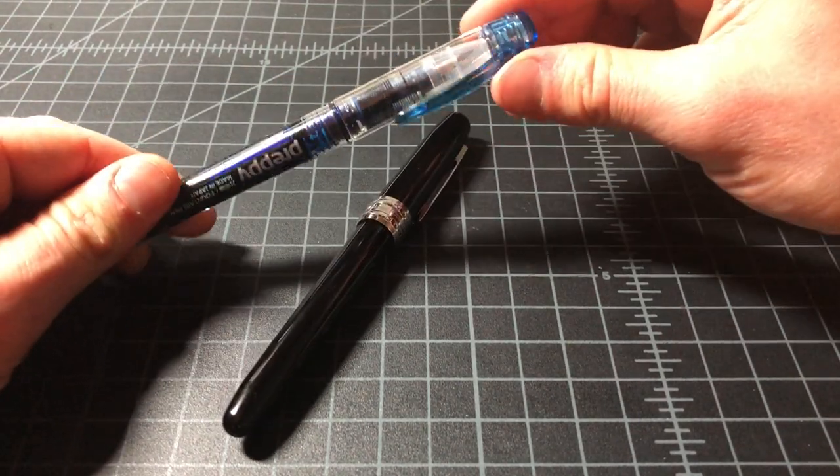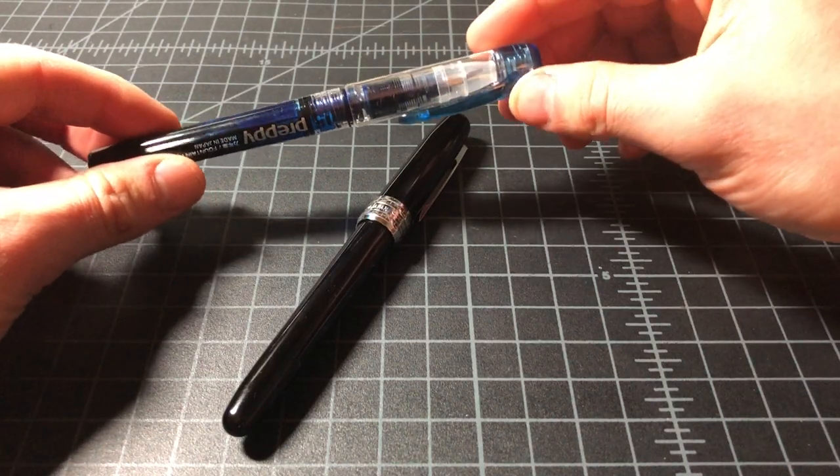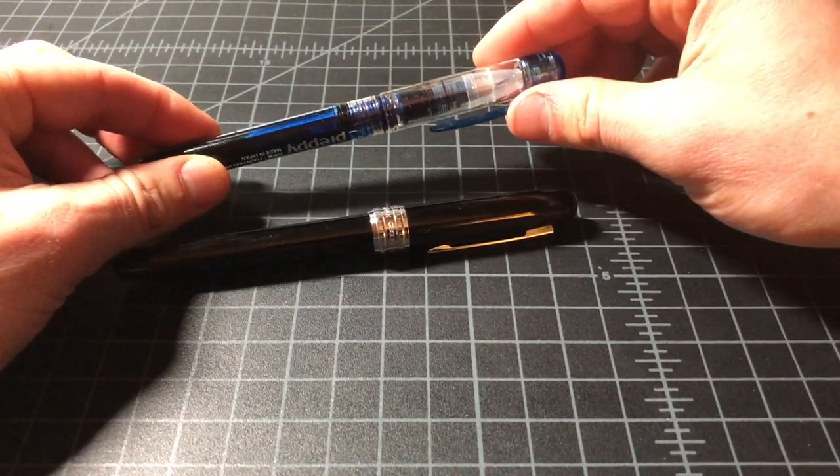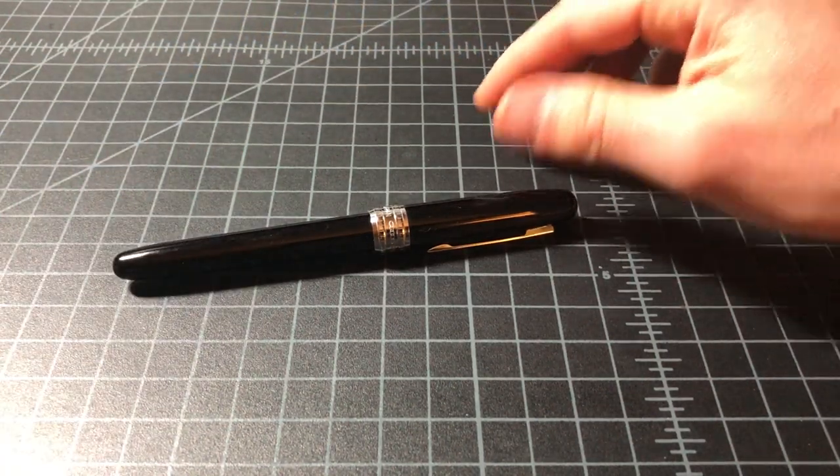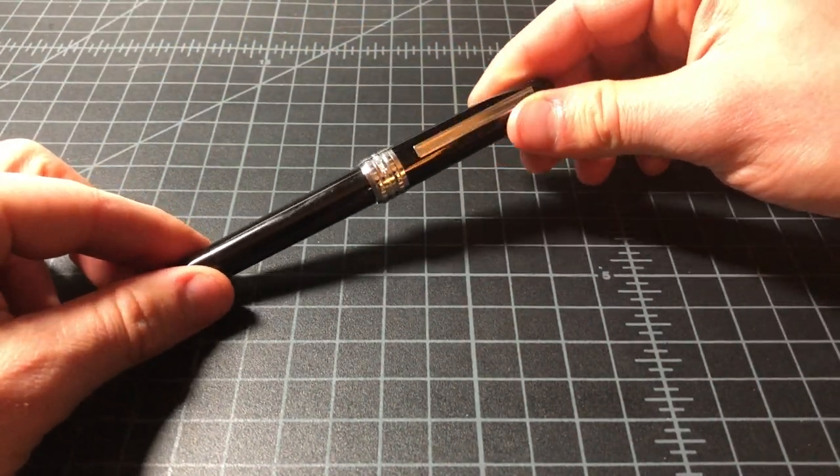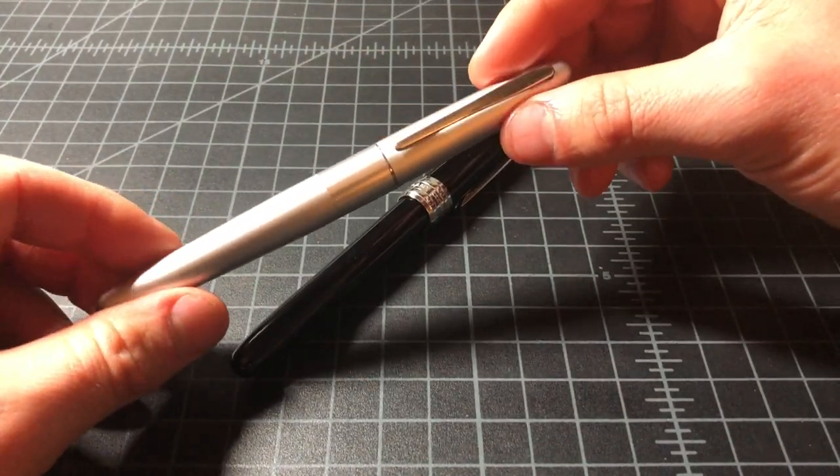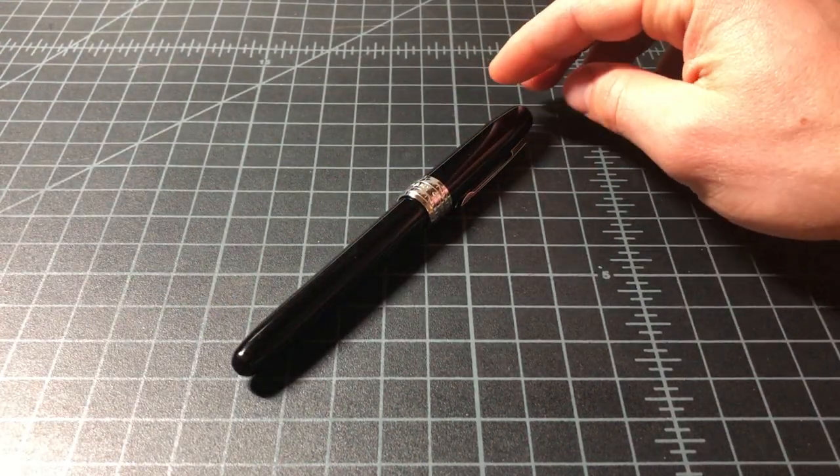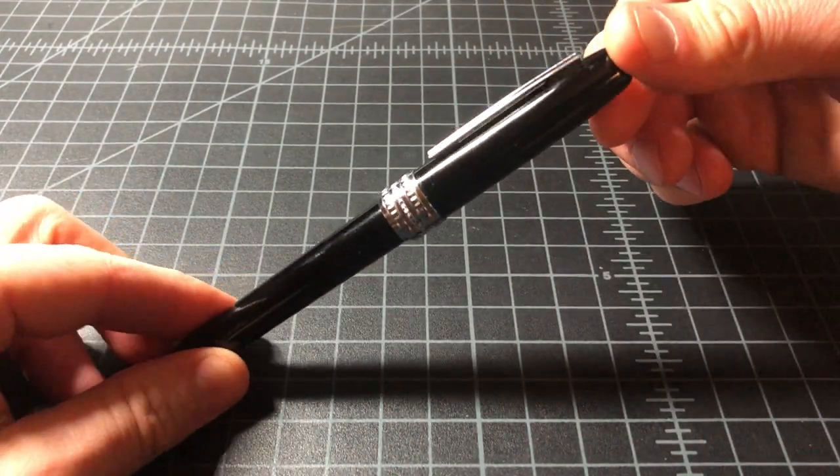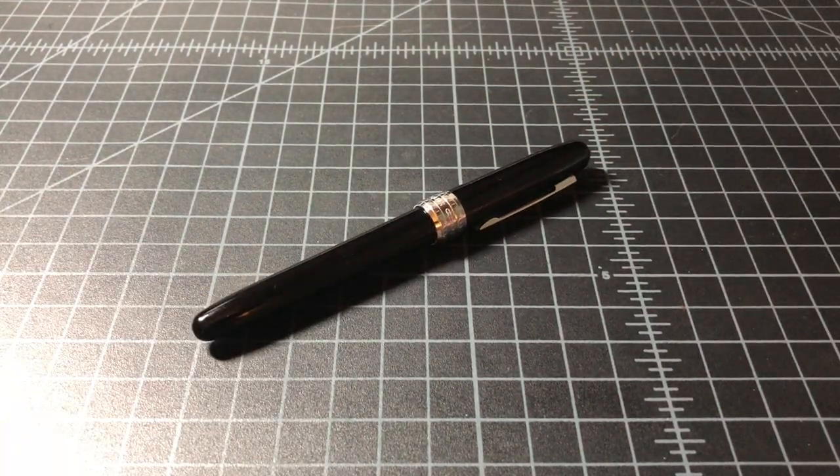For my money, better off getting five Preppies, or maybe not five, three or four Preppies. Really enjoy them. Fill them up with ink. And just don't think about it for a long time. And if you do want something a little bit nicer, probably get the Metropolitan, or actually go with a Twisbi or something like that in the $30 range. This is in a middle point where I think it's a little bit uncomfortable and doesn't quite make sense to do the spend.